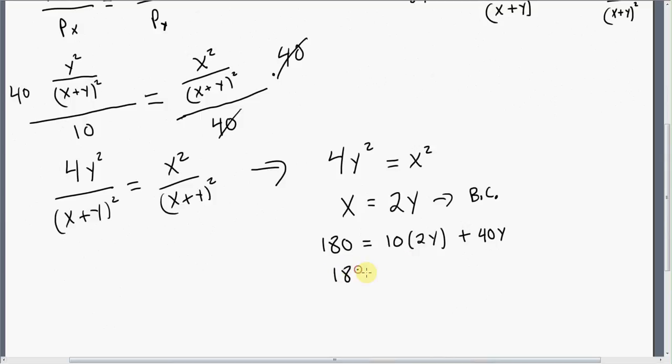So we get 180 equals, well, 60Y. 20Y plus 40Y. Y equals 3. And this means that X, since X is 2 times Y, X will be 2 times 3, or 6.